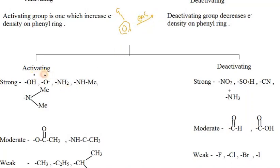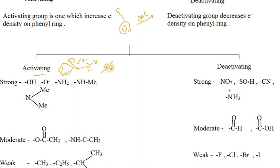For activating groups like OH — oxygen has a lone pair and if it is in resonance with the benzene ring, it activates the ring. OH⁻ similarly donates the lone pair, so it is also activating. Amines are also activating groups.